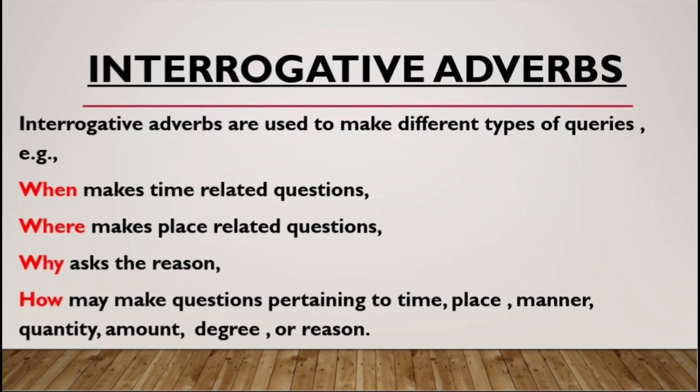Next is 'why.' Why is very simple and basic — it asks questions related to reason. For example: 'Why did you misbehave in the class?' The answer would be a particular reason. The last is 'how.' How is multi-dimensional in its approach — it can ask questions related to time, place, manner, quantity, amount, degree, or reason.